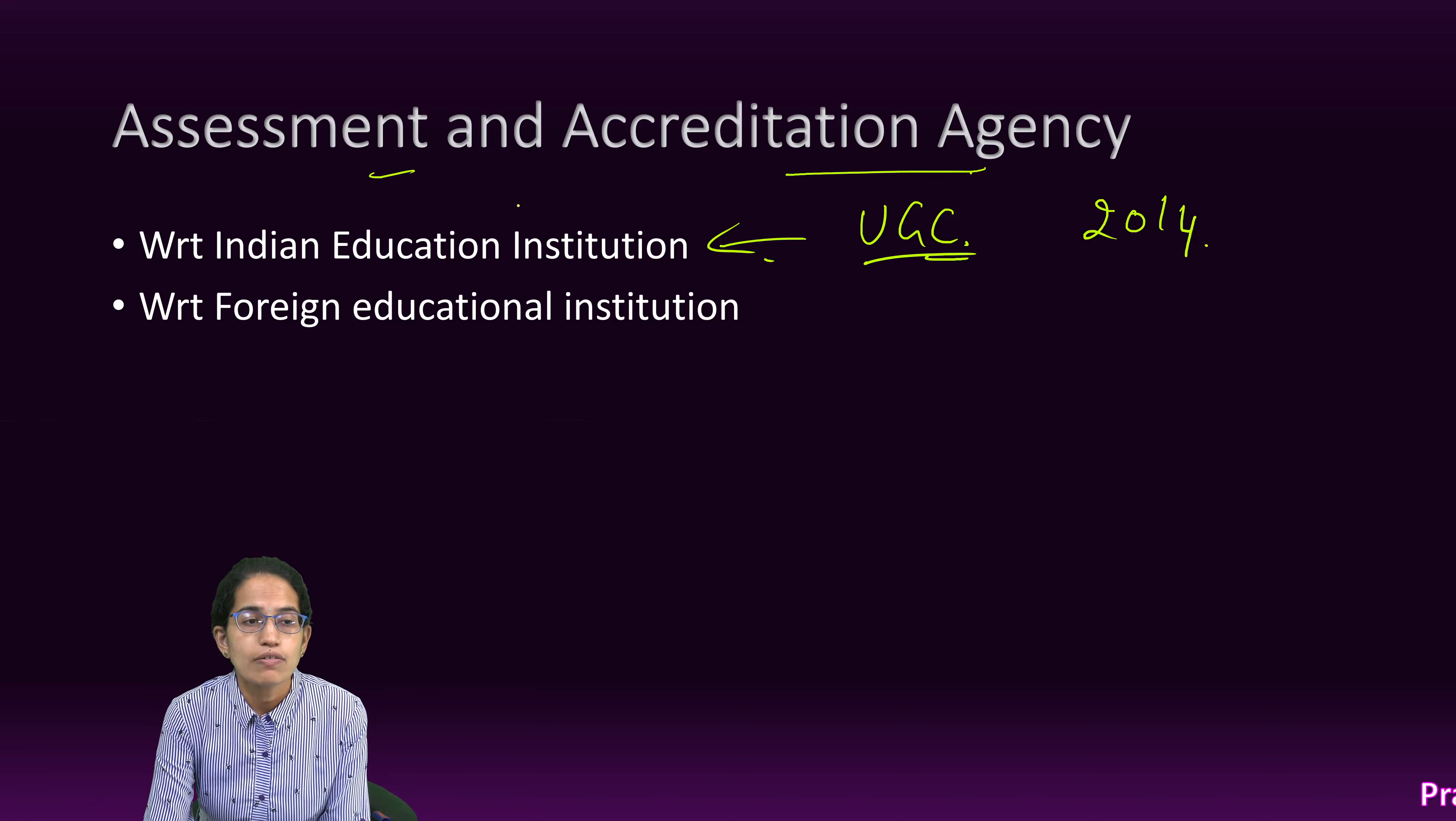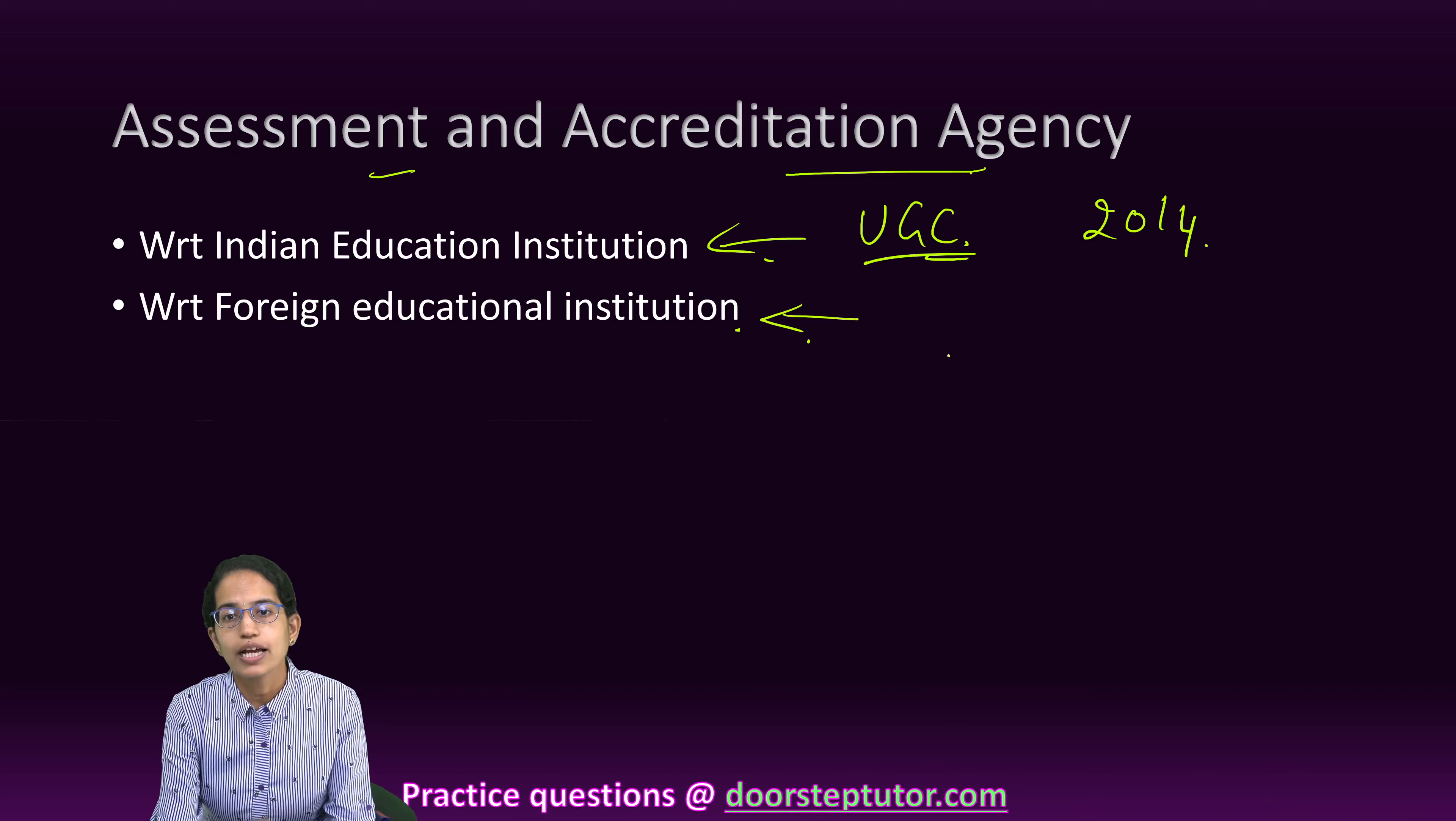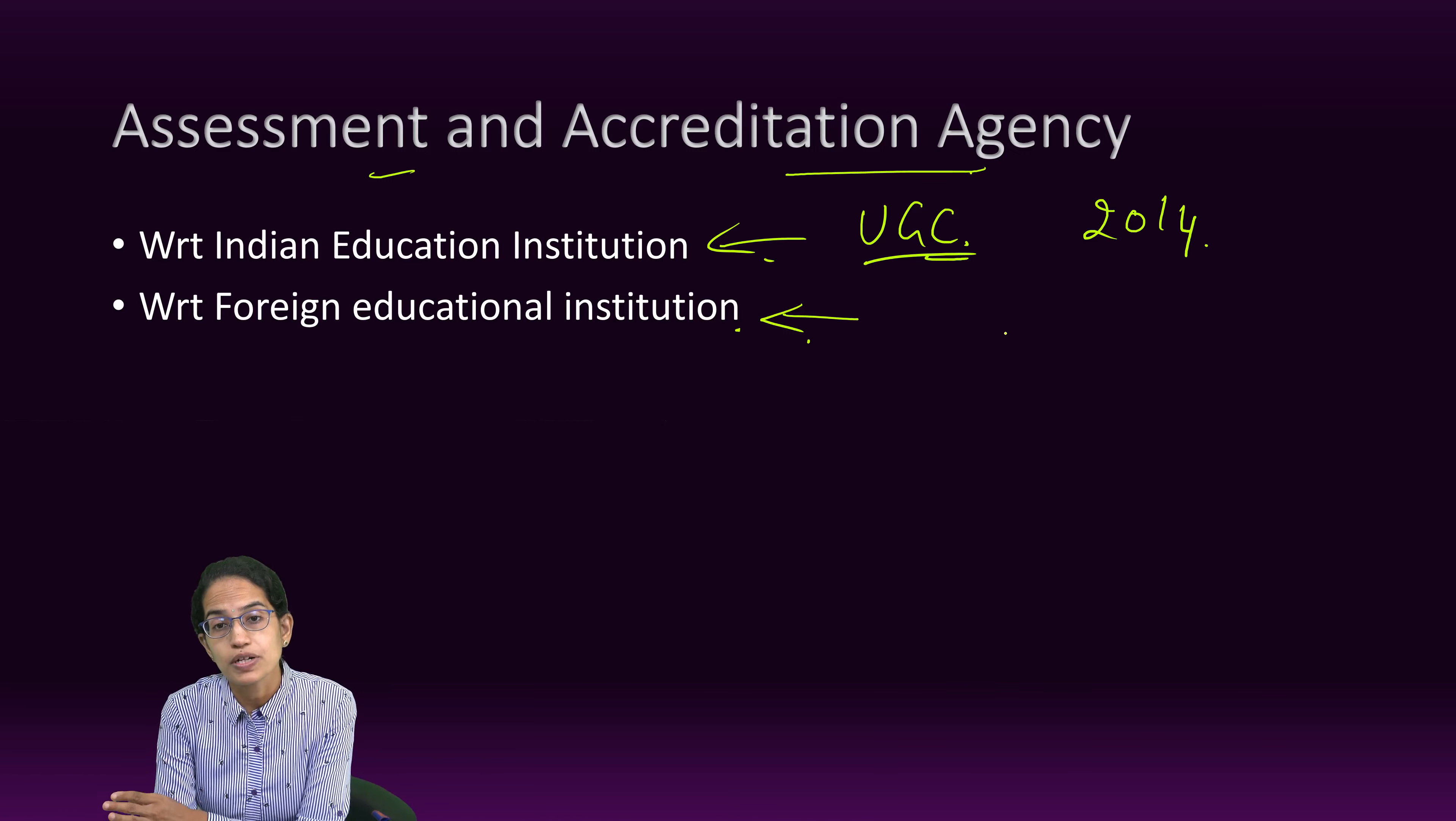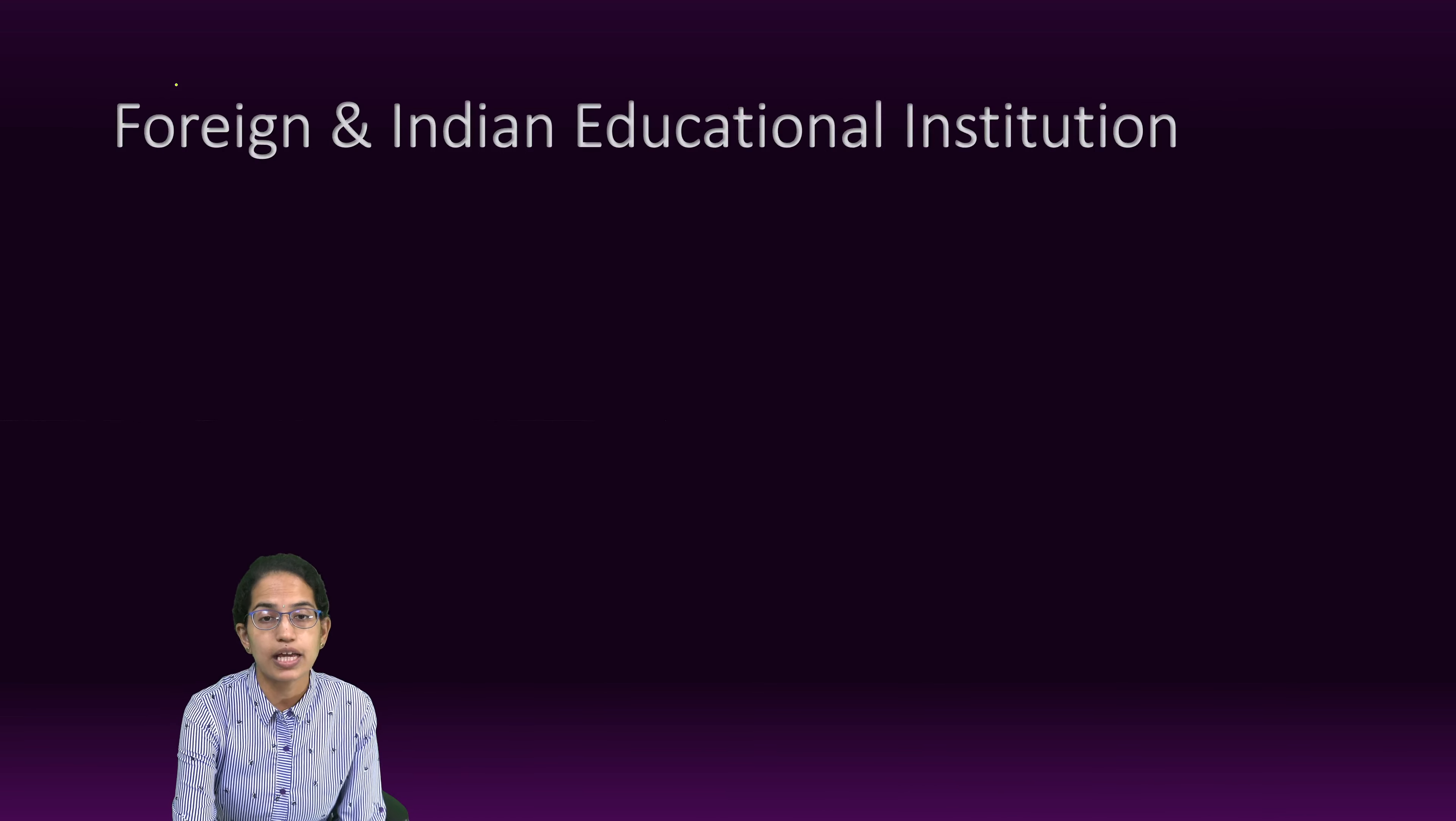Then you have assessment and accreditation agency with respect to foreign educational institutions and this can be an agency authorized, approved or recognized under a law in the home nation or it can be for the purpose of assessing the quality, assessing and assuring the standards of educational institutions. So, those are known as the assessment and the accreditation agency as per the definitions.